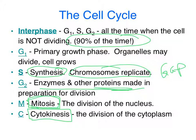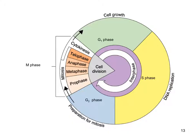Let's look again at interphase. This is a great diagram that talks about the entire cell cycle, and you can see interphase takes up almost the entire part of the pie — a huge chunk of the life cycle of the cell. You can see the G1 phase where the cell is growing, the S phase where DNA replication takes place, and the G2 phase where the cell gets ready for cellular division. Don't forget about interphase when you're studying.